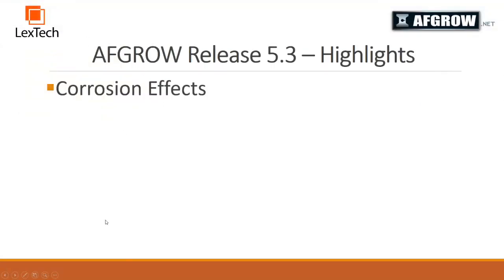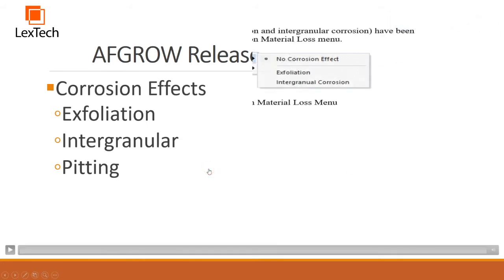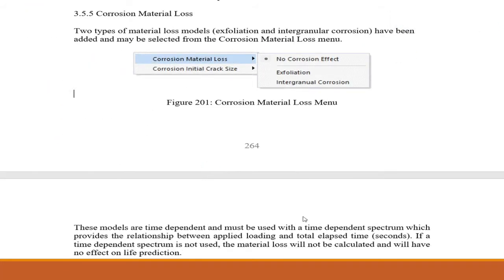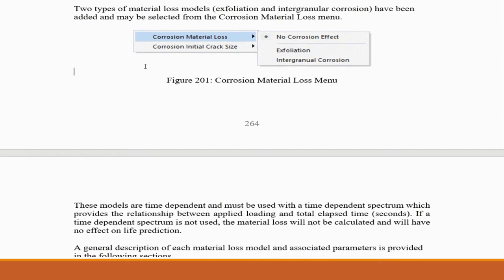We have also added corrosion effects to AFGRO. There are three models: exfoliation, intergranular, and pitting. There are two material loss corrosion models, exfoliation and intergranular. The material loss is modeled as a change in thickness or the equivalent dimension for models without a thickness. These models also require a time dependent spectrum and can only be used one at a time.